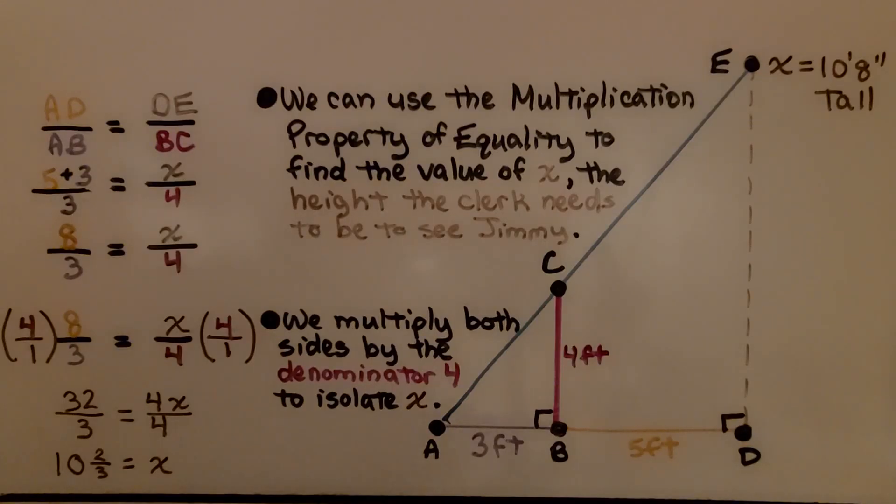This is the diagram without the clerk and without Jimmy. We can use the multiplication property of equality to find the value of X, the height the clerk needs to be to see Jimmy. We have our proportion. We know it's 8 thirds is equal to X over 4.